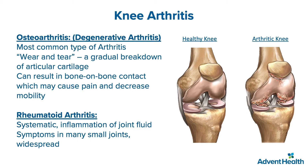Osteoarthritis in the knee basically consists of a wear pattern where the smooth gliding surface of your knee — as you see on the right-hand slide where the circles are — is beginning to wear and become rough. As this surface becomes worn, roughened, and thinned, it begins to ache and hurt and cause swelling, loss of motion, and progressive pain.